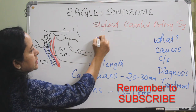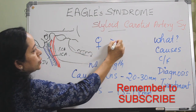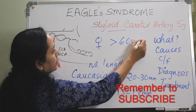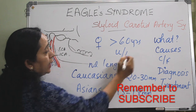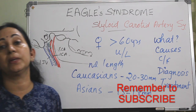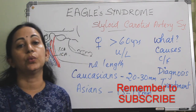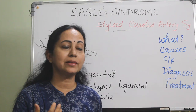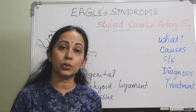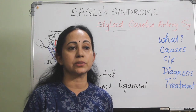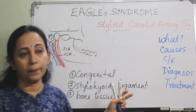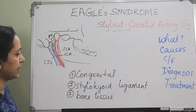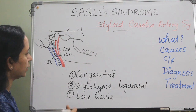Eagle Syndrome is seen more in females above 60 years of age, and it is usually unilateral but can happen bilaterally. Females above 60 years, unilateral — that is the common presentation. We all have a styloid process, but why is it elongated in some patients? And among those with an elongated styloid process, only a few have pain and develop Eagle Syndrome.